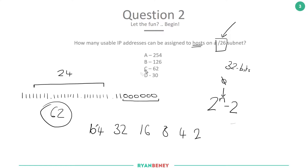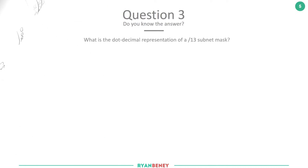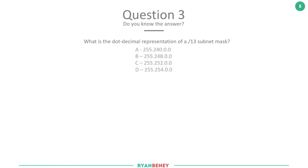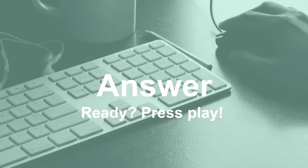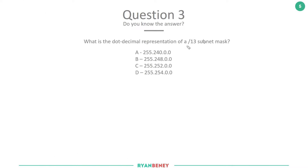Question three: what is the dotted decimal representation of a /13 subnet mask? The answers are: A) 255.240.0.0, B) 255.248.0.0, C) 255.252.0.0, or D) 255.254.0.0. Make sure you pause the video, and then when you're ready and you think you have the answer, press play and we'll go through it together.